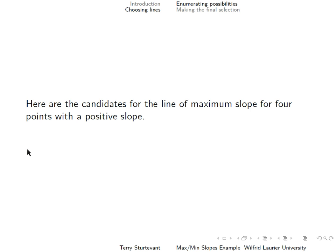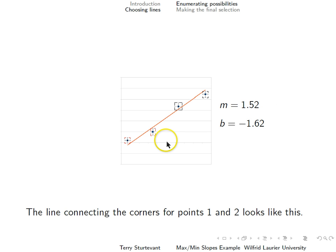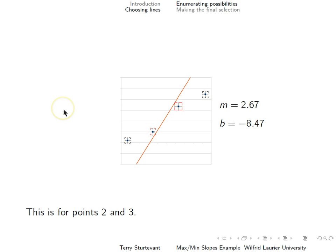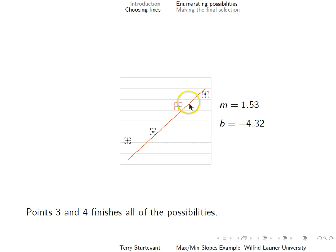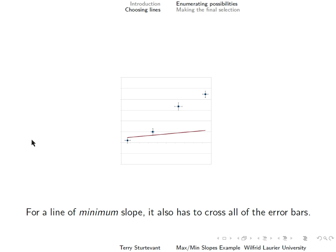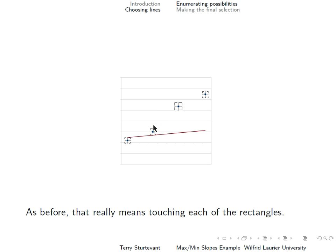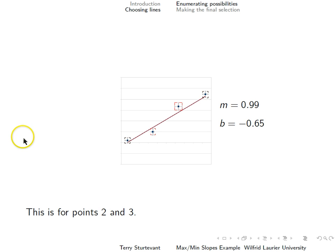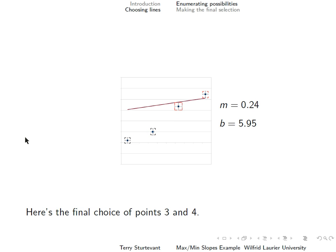For those four points with a positive slope, here are the candidates for the line of maximum slope. We have the line connecting the corners of points 1 and 2, then points 1 and 3, then points 1 and 4, then points 2 and 3, then points 2 and 4, and finally points 3 and 4, giving us all of the possibilities. Here are the choices for the line of minimum slope with the same combinations: 1 and 2, 1 and 3, 1 and 4 — which is actually a different line — then 2 and 3, 2 and 4, and finally 3 and 4.